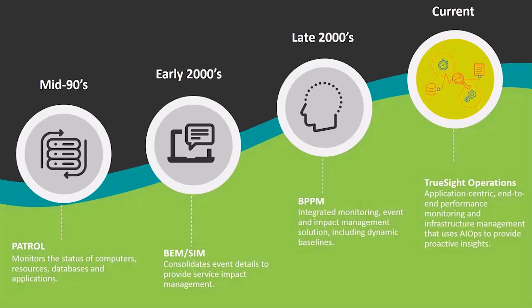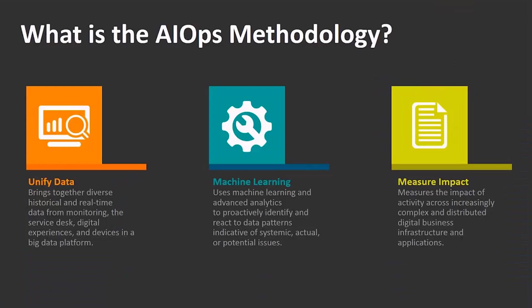Now in the current environment we're entering the age of an application-centric end-to-end performance monitoring solution that takes the use of analytics to the next level — all around AI ops. This is what we call TruSight. So let's drill down a bit into AI ops. AI ops stands for Artificial Intelligence for IT Operations.